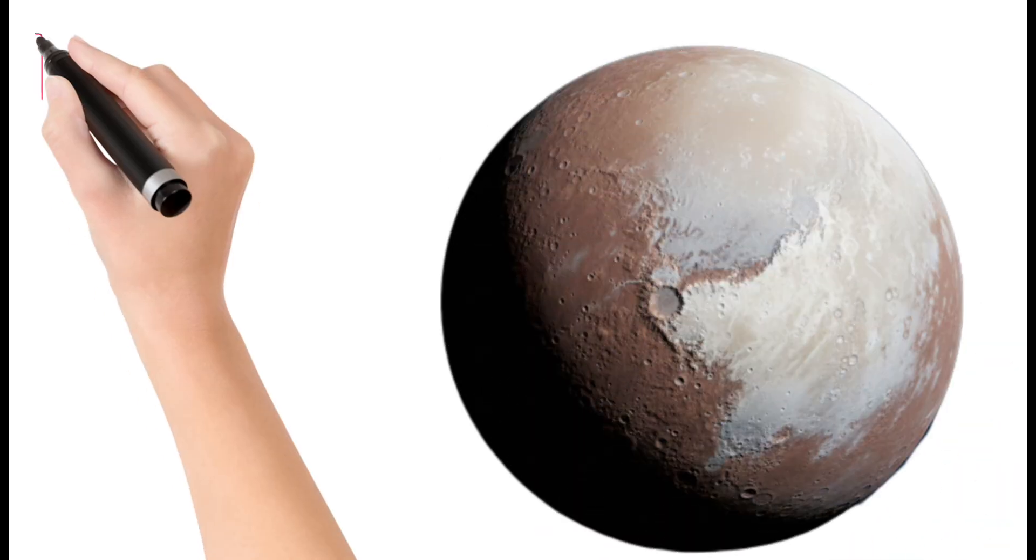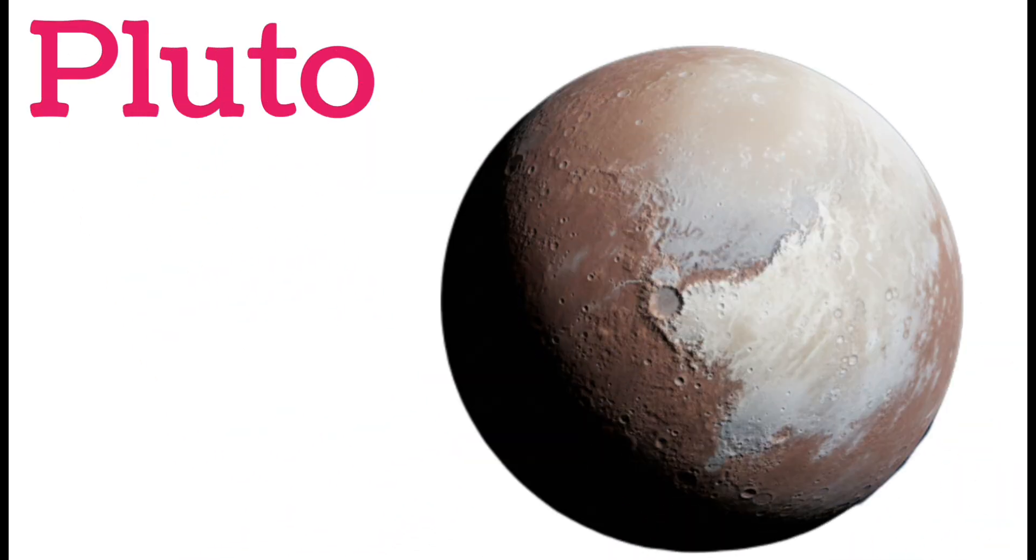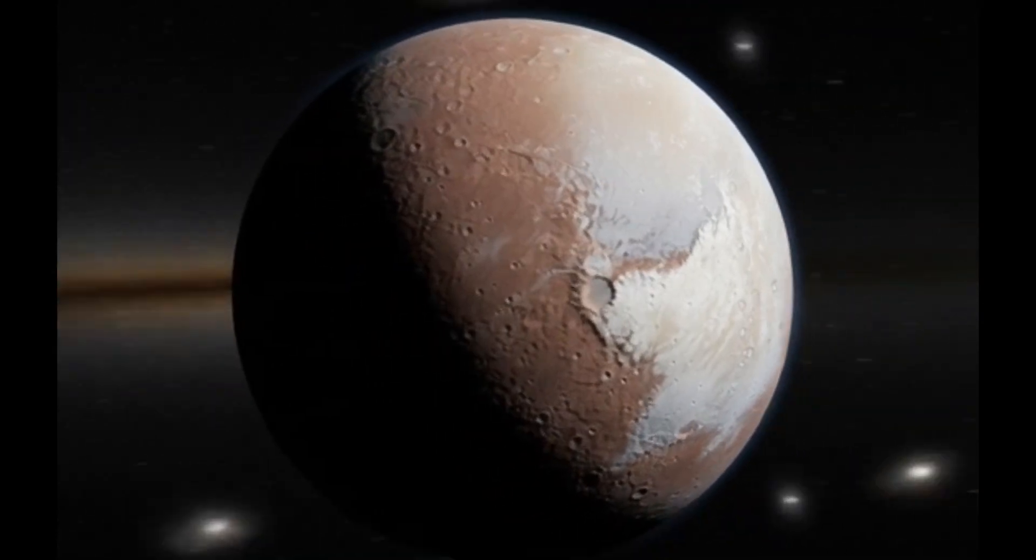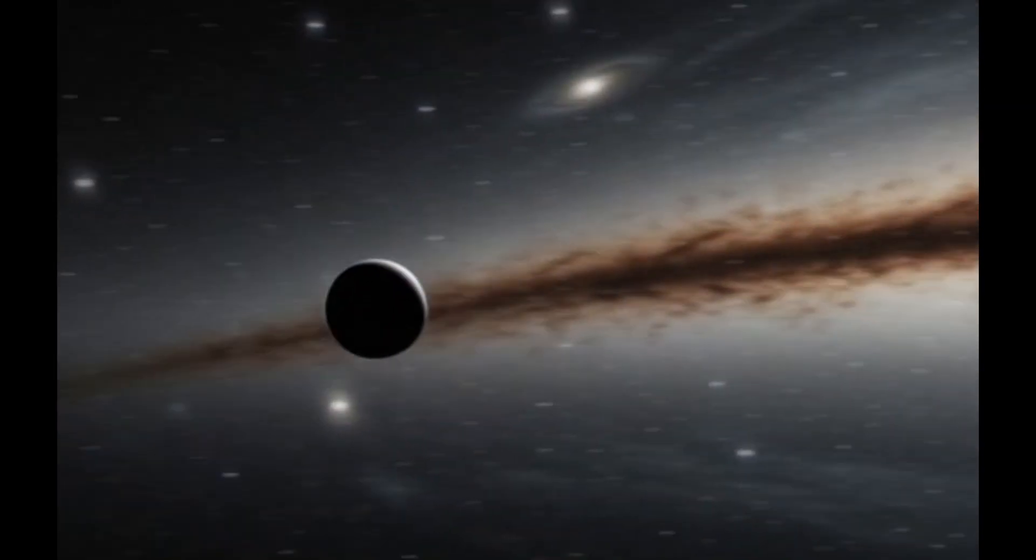Next, Pluto. Pluto is a dwarf planet. It lies in the Kuiper Belt. Pluto is very cold and icy. It has five known moons.